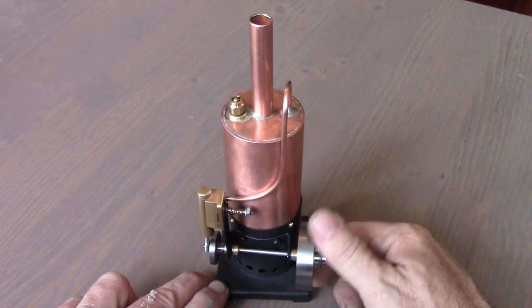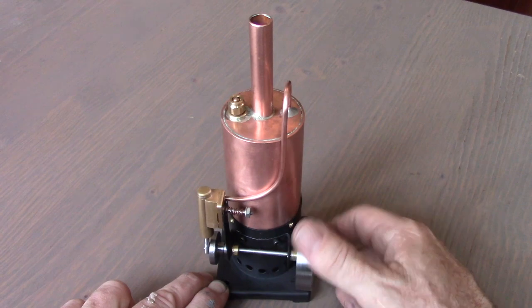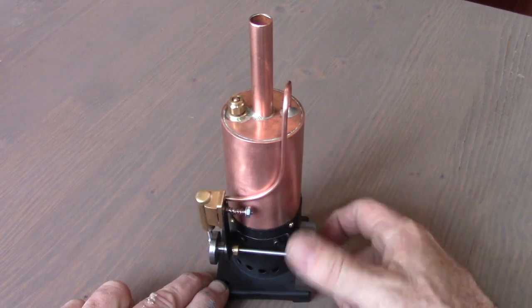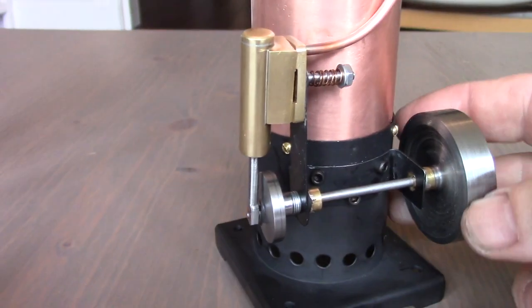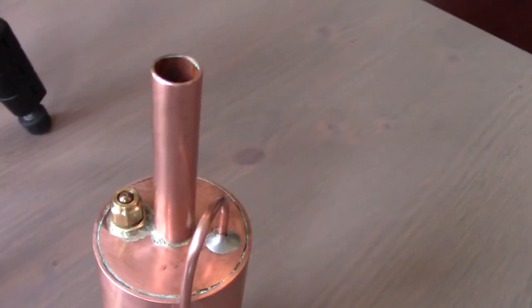The firebox and stand were painted black with high heat enamel. After lubrication with some light machine oil, Ralph is tested for smooth operation of all the parts.